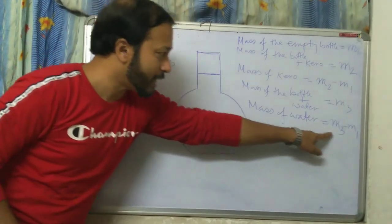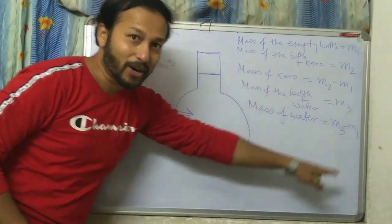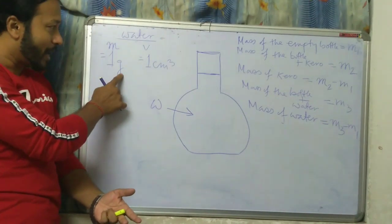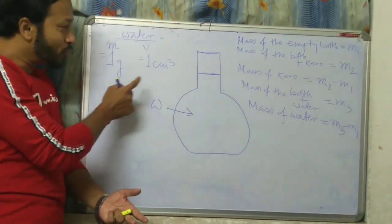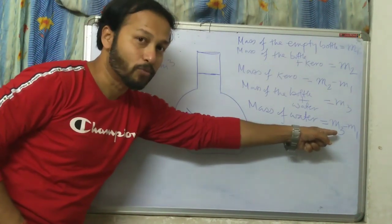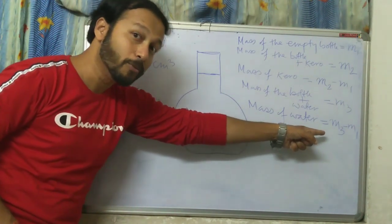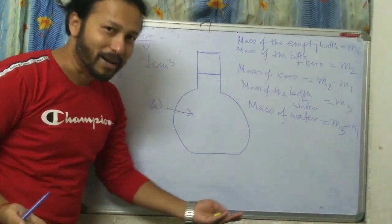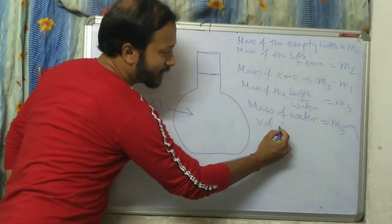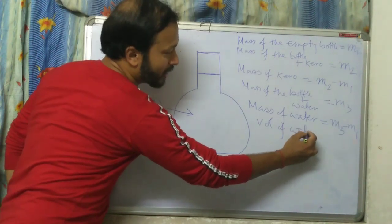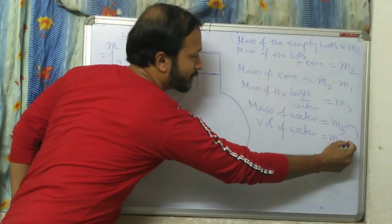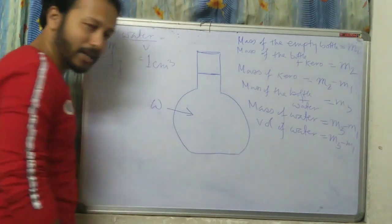If the mass of water is M3 minus M1, then the volume of water is also M3 minus M1 centimeter cube, because for water mass in grams equals volume in centimeter cube.